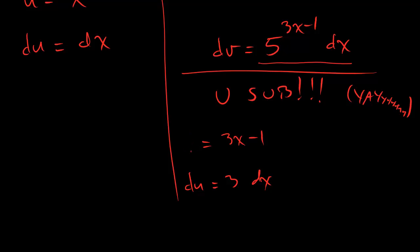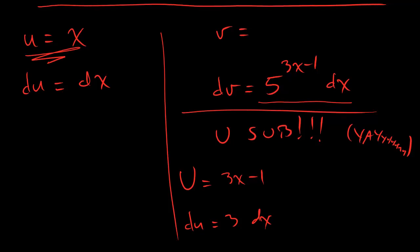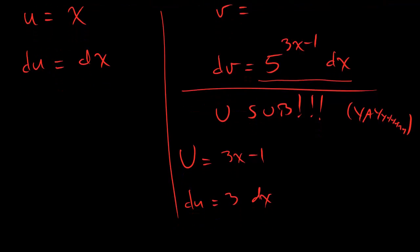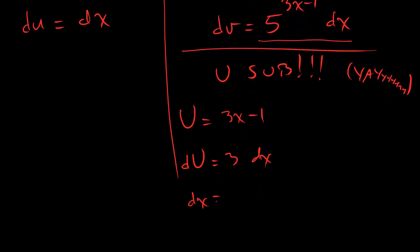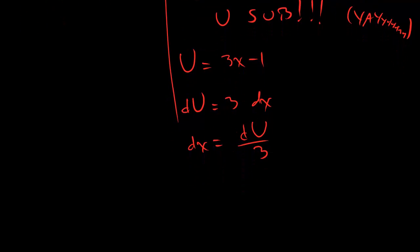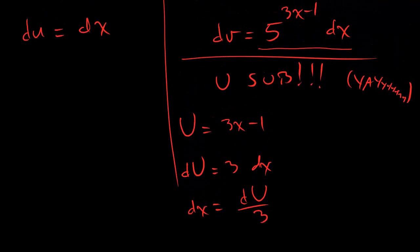We calculate du and that's just 3dx. And guys, maybe I'll just use like a capital U here because it's a different u than, you know, this guy. Not the same u. So I'll just use a capital U to hopefully make that a little bit more sensible. I don't know if that helps or hurts, but whatever. So we've got u equals 3x minus 1, du equals 3dx. That means that dx is going to be du over 3. And now all we've got to do is plug that in, and here's what we get.